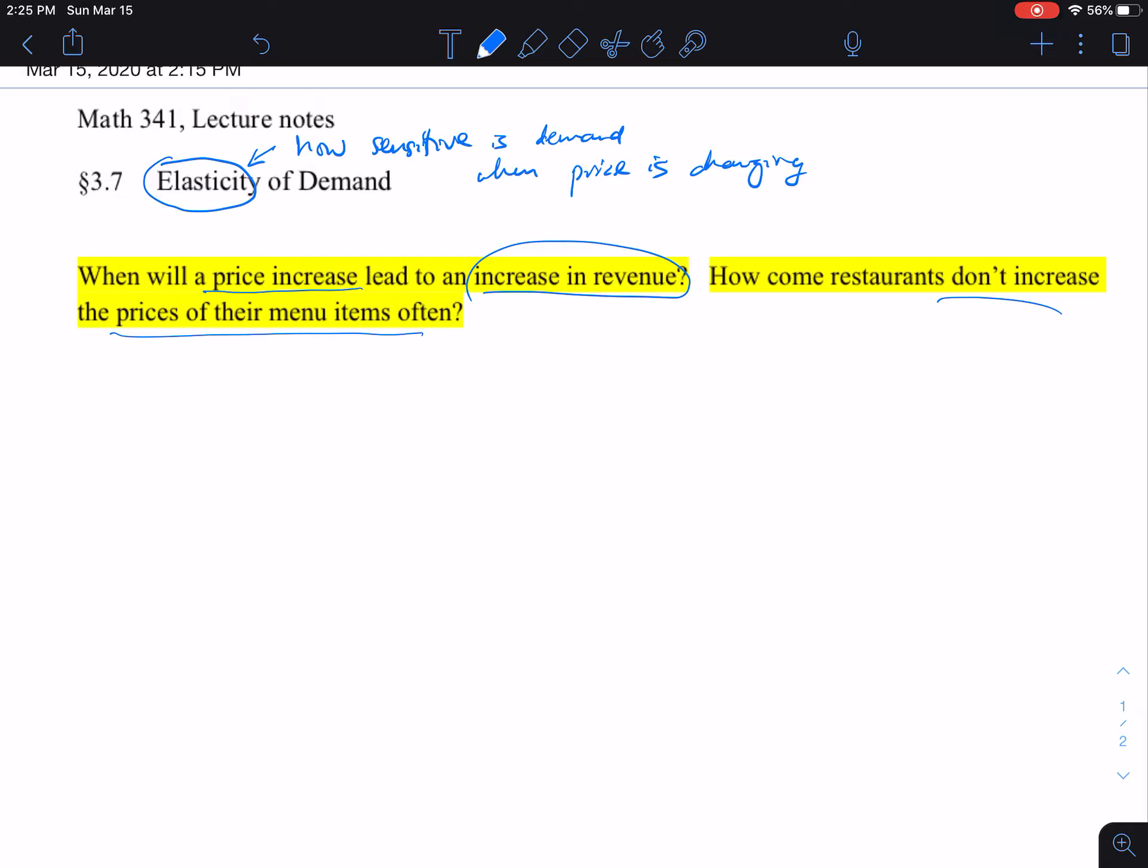If restaurants increase prices, the company will lose the demand of customers. They try not to raise prices often due to competition. For example, there are many fast food restaurants out there, and when one restaurant raises their price, other people will look for alternatives. This is something you learn in economics as well - it depends on the type of product. The elasticity of that product can be inelastic or elastic. It depends whether the product itself is considered a necessity or not.